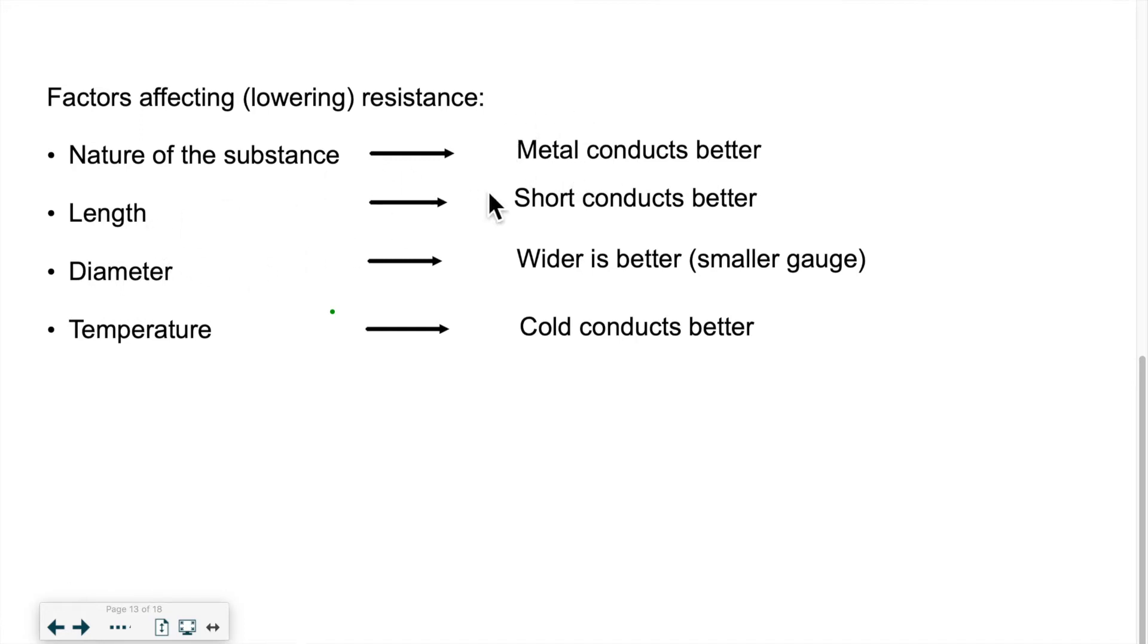The length. The shorter, the better. So a very long wire will lose some of its electricity. It will dissipate in the surroundings. Diameter. So the wider is better. Sometimes you're going to see a measurement. If you go to the hardware store and you're looking at wiring, there is what we call the gauge. That's basically the measuring of the diameter. So the smaller the gauge, the larger the diameter. So it's kind of counterintuitive, but that's what it is. So smaller gauge, wider diameter, that's better.